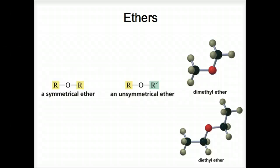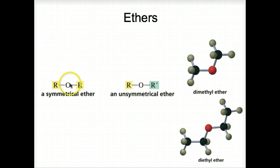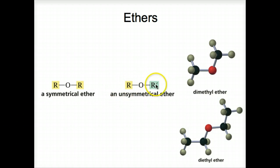Welcome to Nomenclature of Ethers and Alcohols. Let's take a look at this first slide. This is trying to show symmetrical versus unsymmetrical ethers. Symmetrical means both of the alkyl groups on either side of the oxygen are the same. Unsymmetrical means you have an R group and R prime, implying that the two alkyl groups are not the same.